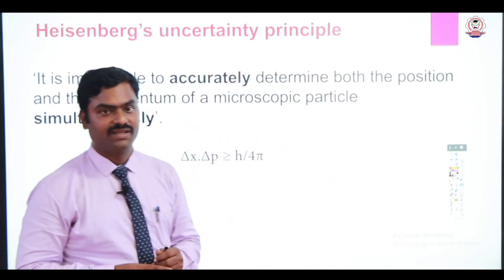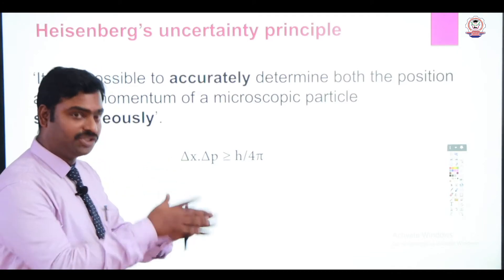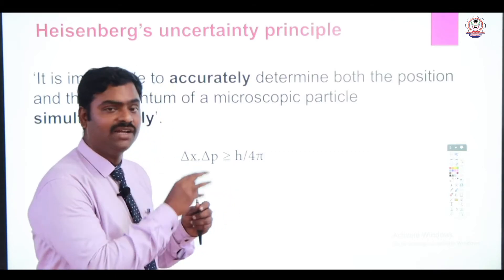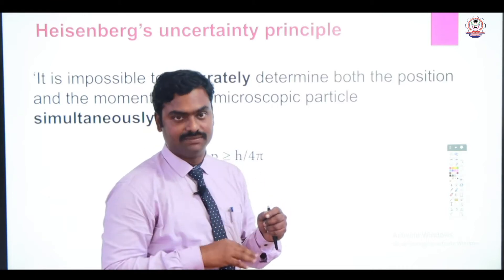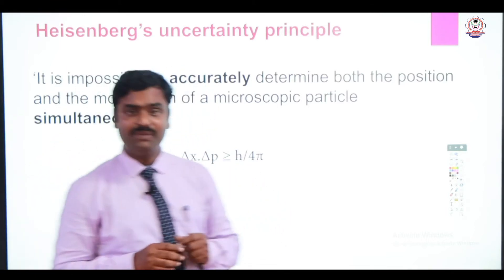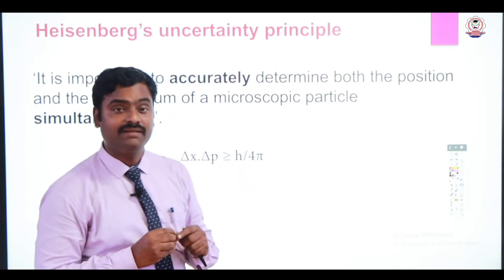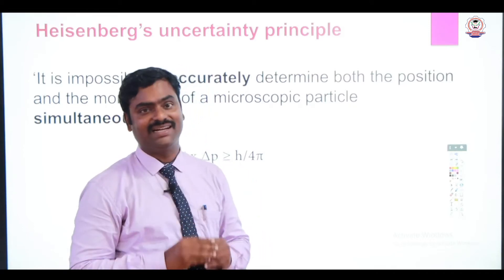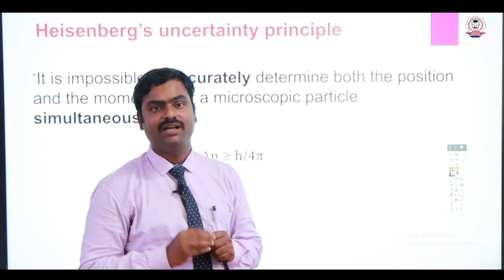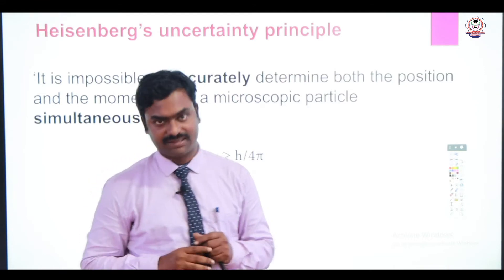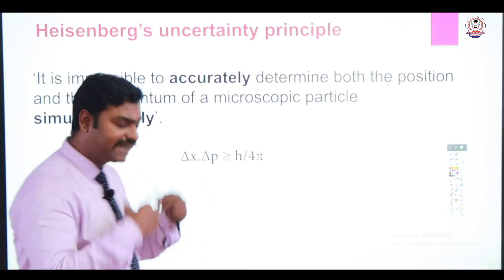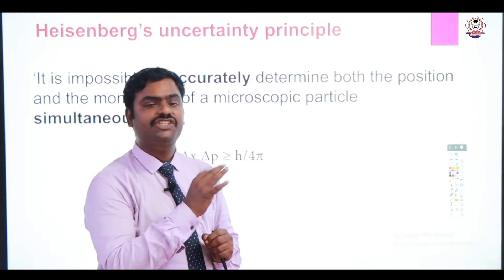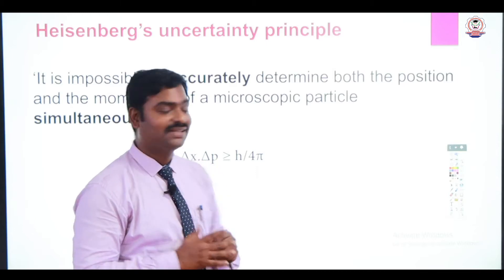According to Heisenberg, the uncertainty in position is called del x — that means the error when you find out the position of the microscopic particle. Likewise, the error in momentum is denoted as del p — that means the error if you find out the momentum of the moving microscopic particles. The product of del x and del p must be greater than or equal to h divided by 4π. That is a constant value.